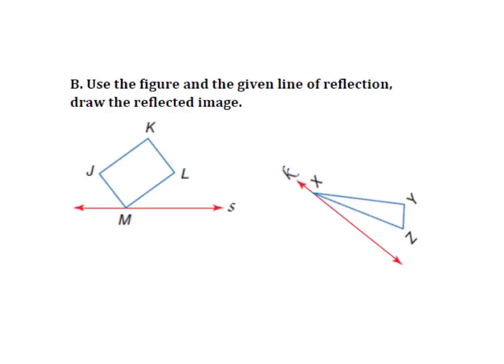So use a figure and give a line of reflection. Draw the reflected image. So it doesn't have to be perfect, but be a little bit artistic here. Try and do the best you can. So I want to try and match up there. There. So there would be L, J, K. So that would be my new shape.